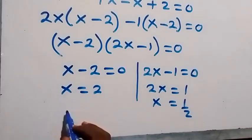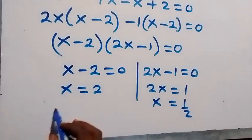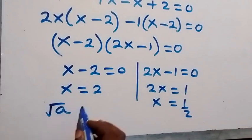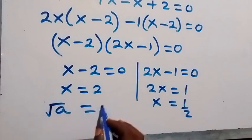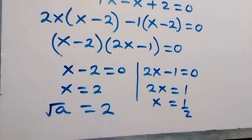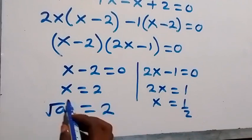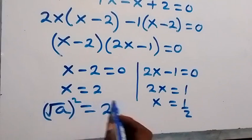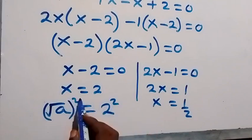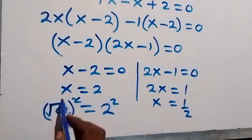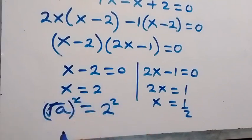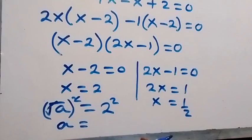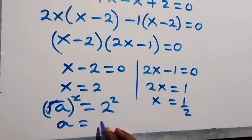For x equals 2: root a equals 2. Squaring both sides, the square root cancels, giving us a equals 2 squared, which is 4.